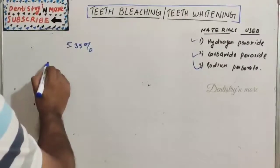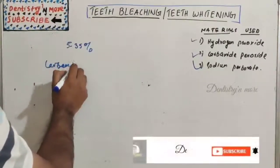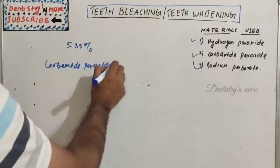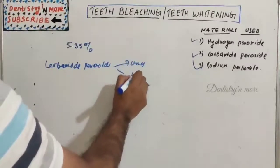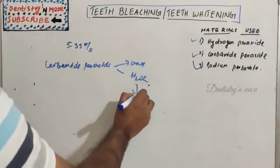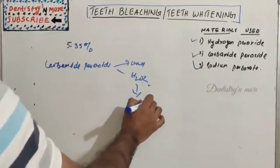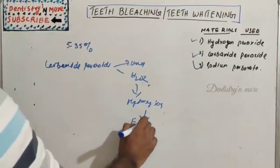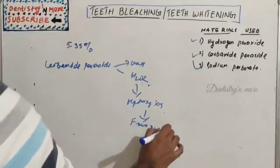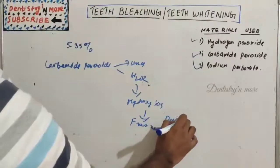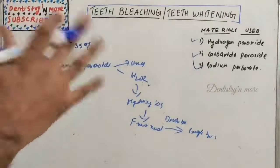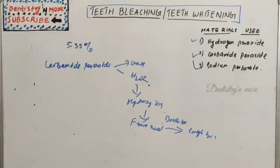Carbamide peroxide — also called urea hydrogen peroxide — dissociates into urea and hydrogen peroxide. This forms hydroxyl ions, which create free radicals with electrons that split the double bond into a single bond. Those are the three products commonly used for bleaching: hydrogen peroxide, carbamide peroxide, and sodium perborate.